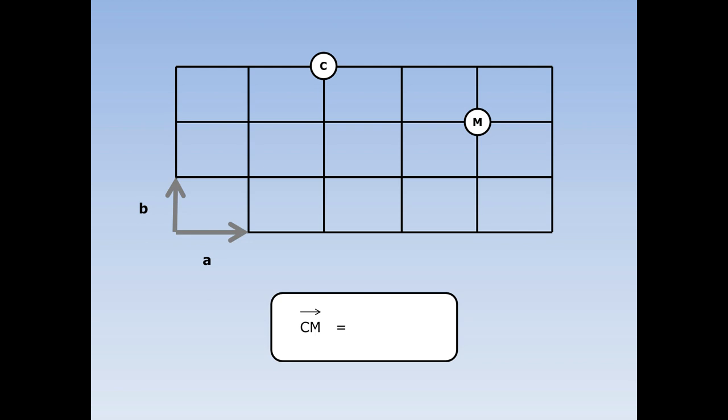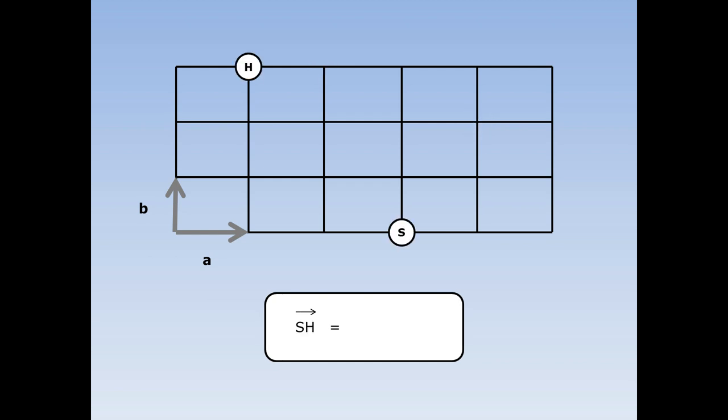How do I get from the cinema to the museum? I need to go along two A roads and the wrong way down a B road, so the answer is two A minus one B. How do I get from the school to the hospital? I need to go the wrong way along two A roads and then the right way up three B roads, so the answer is minus two A plus three B.